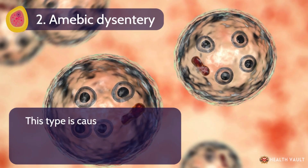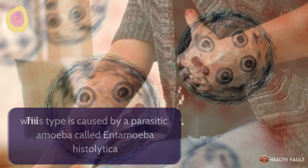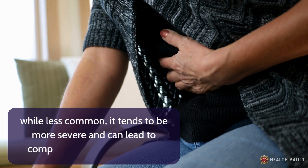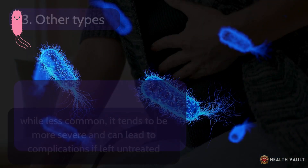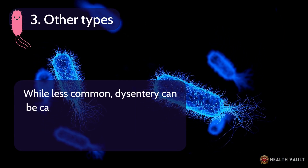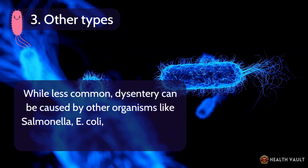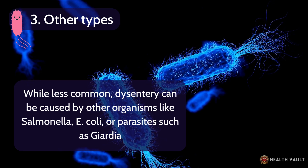Number 2: Amoebic dysentery. This type is caused by a parasitic amoeba called Entamoeba histolytica. While less common, it tends to be more severe and can lead to complications if left untreated. Number 3: Other types. While less common, dysentery can also be caused by other organisms like Salmonella, E. coli, or parasites such as Giardia.